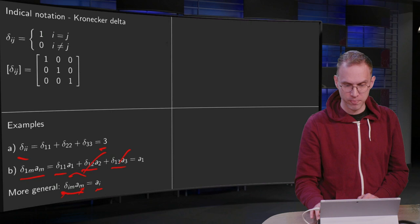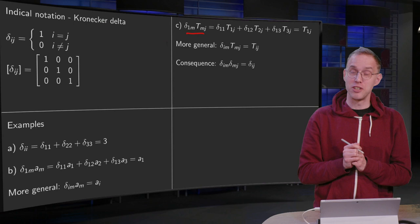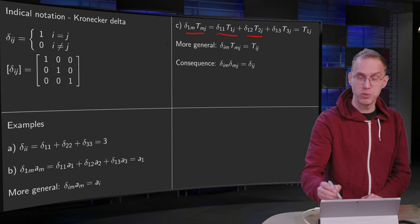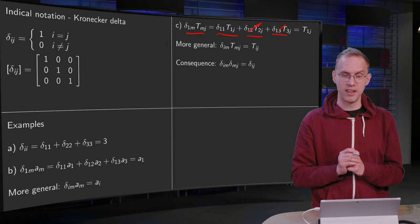Now let's see what happens if we compute delta 1m times tmj. We sum over the m, so we get delta 11·t1j plus delta 12·t2j plus delta 13·t3j. And again, these are 0, so we get delta 11 is 1, so we get t1j. So what does it do? The delta 1m·tmj selects the components t1j where m equals 1.